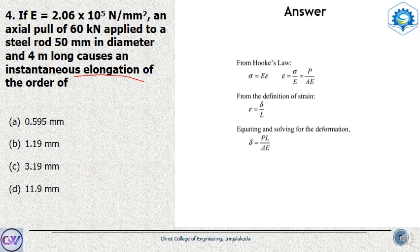From Hooke's Law, stress is proportional to strain. By equating the formula for stress and strain, the deformation of a material is given as δ = PL/AE, where P is the axial load, L is the length, A is the area of cross-section, and E is the modulus of elasticity of the material.